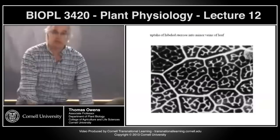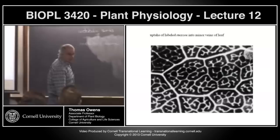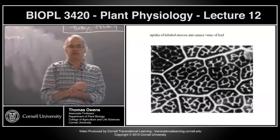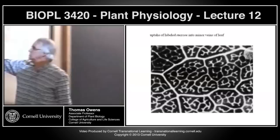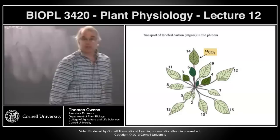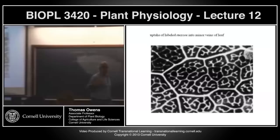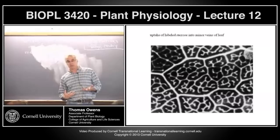Another relevant experiment: take a leaf, peel the epidermis off, and paint radioactively labeled sucrose on the leaf. This is a micrograph of the leaf showing the minor vein patterns — all the white things are minor veins. Very quickly, all the sucrose — all the radioactivity — ends up in the minor veins in a matter of seconds. We have the capacity for long-distance transport from specific sources to sinks, and also the capacity to get sugars from leaf cells into the veins very quickly.